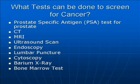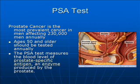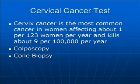Prostate cancer is the most prevalent cancer in men, affecting 230,000 men annually. The PSA test measures the blood level of prostate specific antigen. Cervical cancer is the second most common cancer in women, affecting about 1 out of 123 women per year and kills about 9 per 100,000 per year.